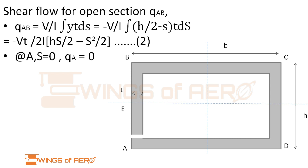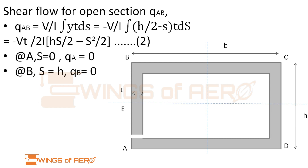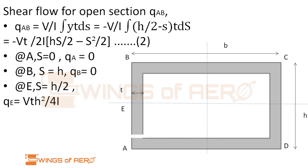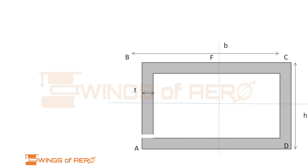Now we find the shear flow for the open section at q_BC: q_BC = q_B + (V/I) × integral of y·t·ds. Since q_B = 0, and for the BC member the y-value is h/2 (upward from centroid), substituting and integrating from 0 to s we get q_BC = Vhts/(2I). This is equation 3. At point B, s = 0; at point C, s = B, giving q_C = VhtB/(2I); at point F, s = B/2, giving q_F = VthB/(4I).